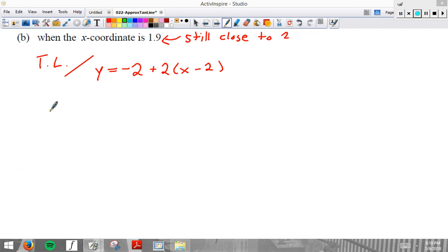So, the X coordinate is 1.9. So, when X equals 1.9, Y will be approximately 2. I keep doing that. I'm so sorry. Negative 2 plus 2 times 1.9 minus 2.